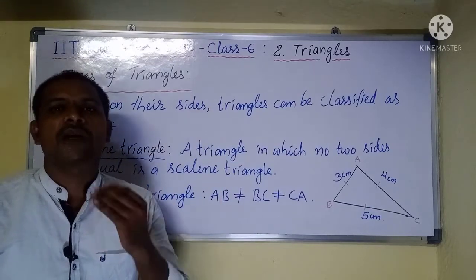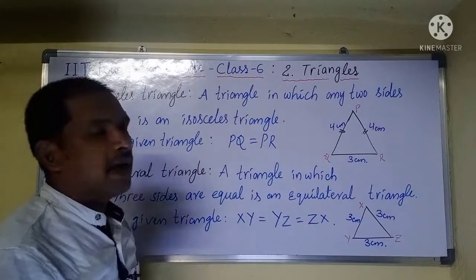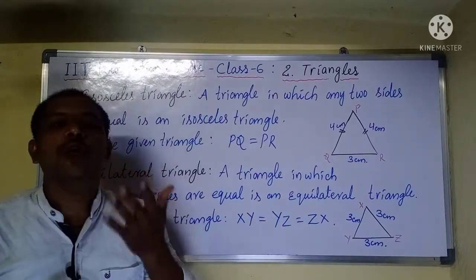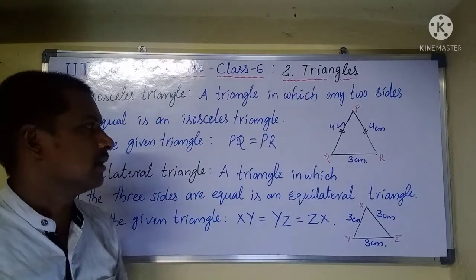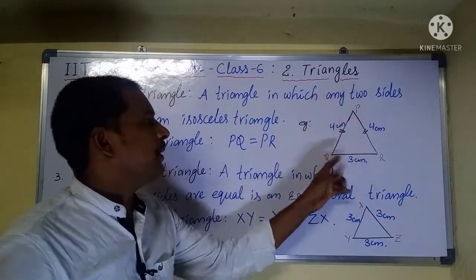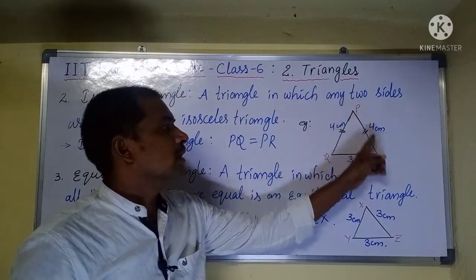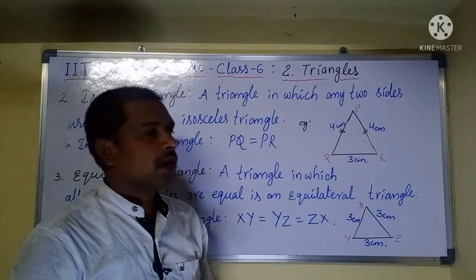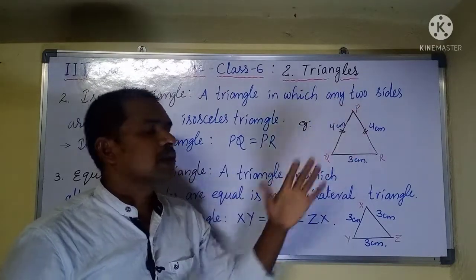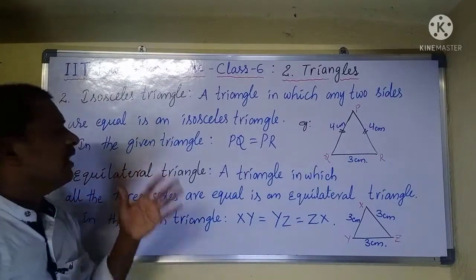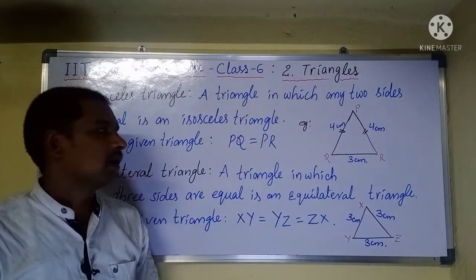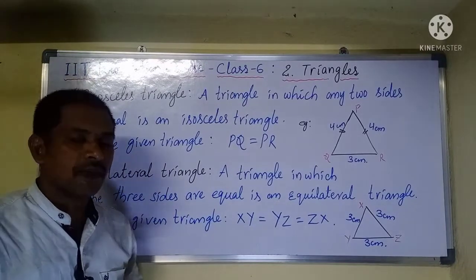The second type is an isosceles triangle. A triangle in which any two sides are equal is called an isosceles triangle. For example, in triangle PQR, side PQ is equal to side PR, so the third side is different. Since PQ equals PR, this is called an isosceles triangle.